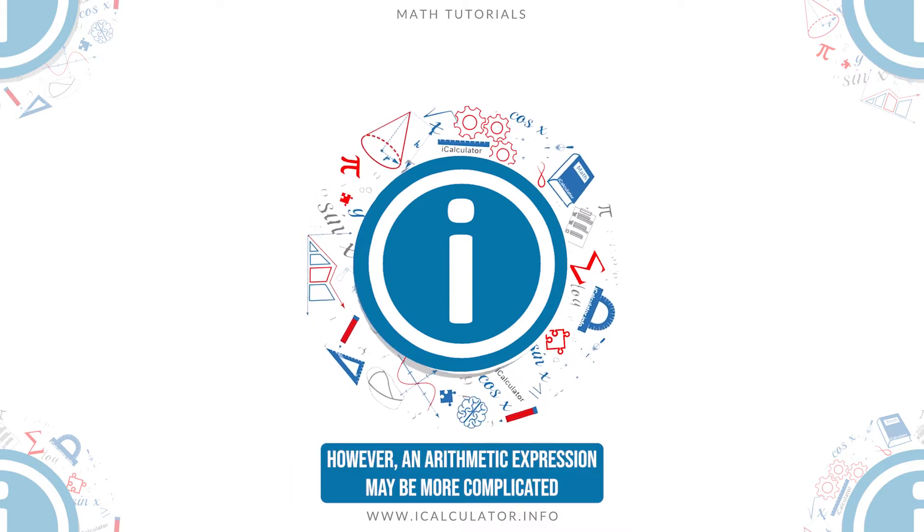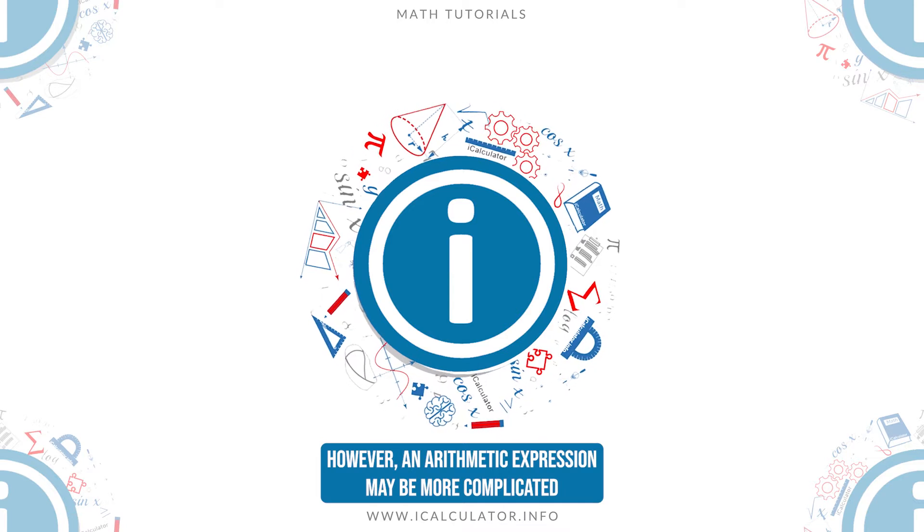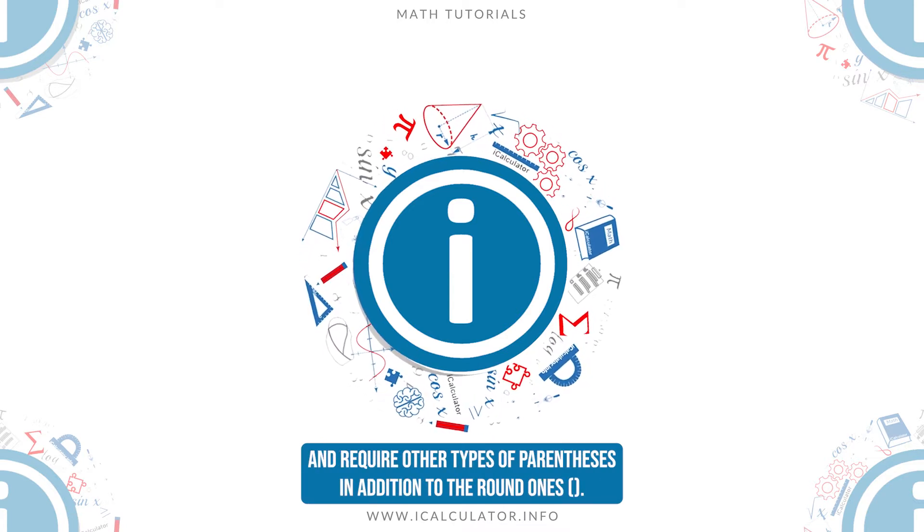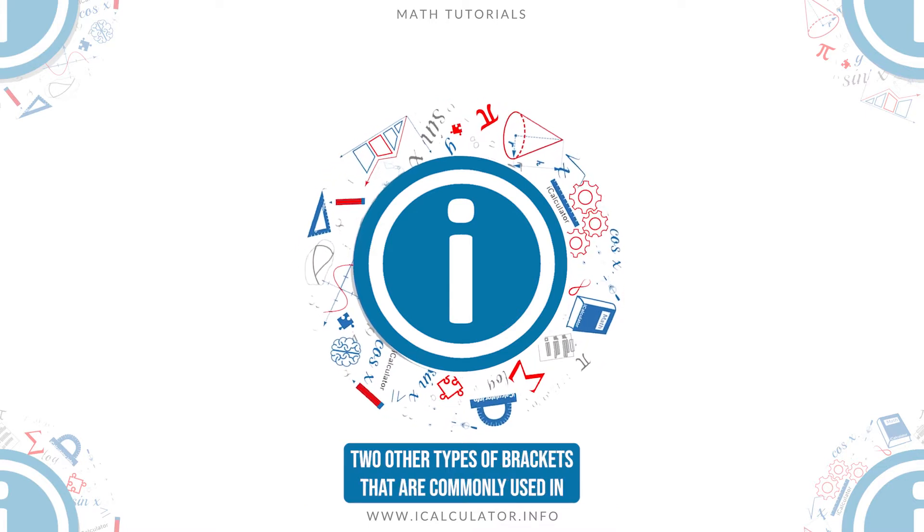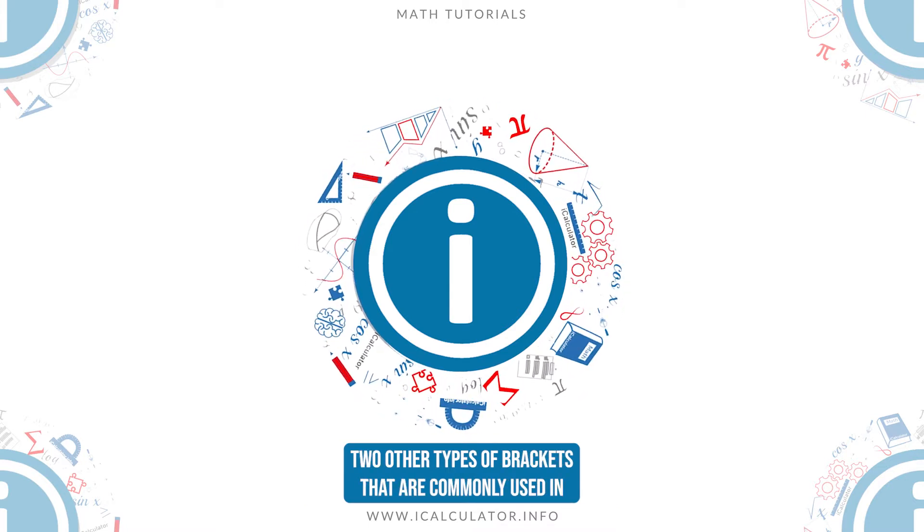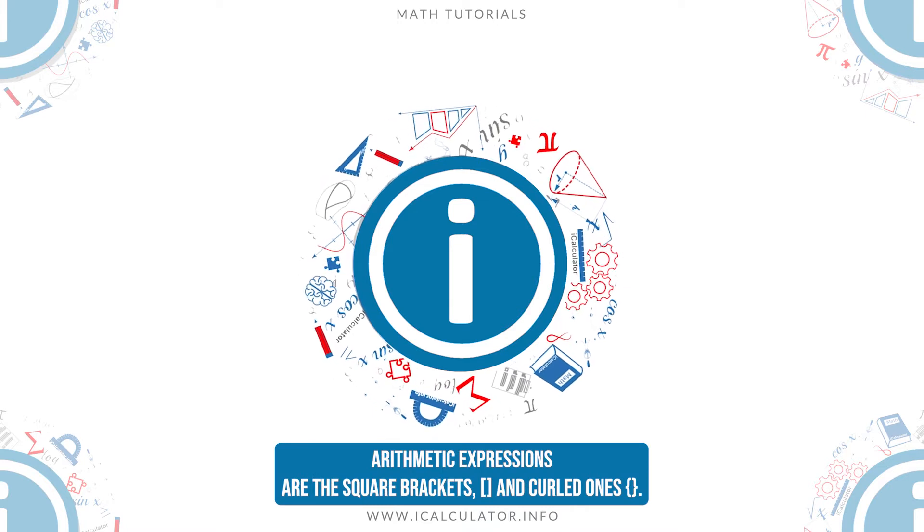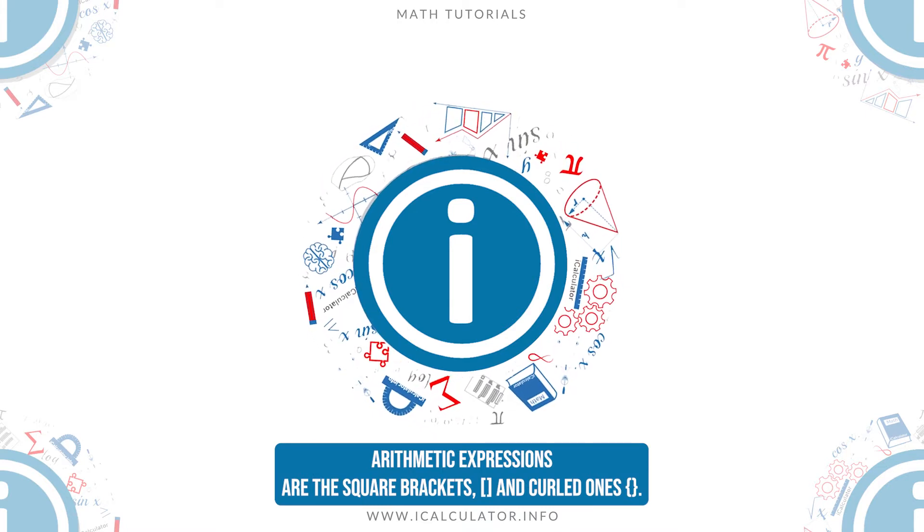However, an arithmetic expression may be more complicated and require other types of parentheses in addition to the round ones. Two other types of brackets that are commonly used in arithmetic expressions are the square brackets and curled ones.